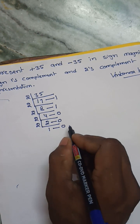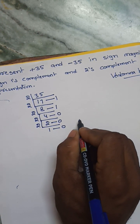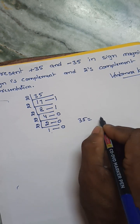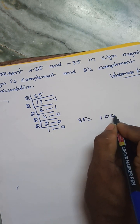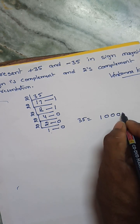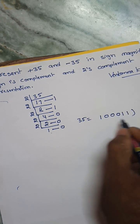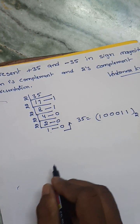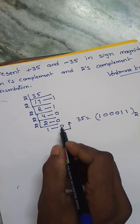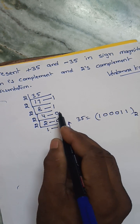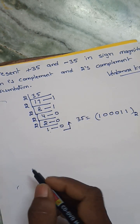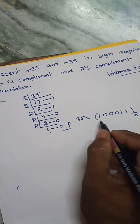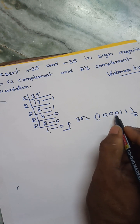So the binary representation for 35 is equal to: reading the remainders from bottom to top — 1, 0, 0, 0, 1, 1. So this is the binary representation for 35: 100011.